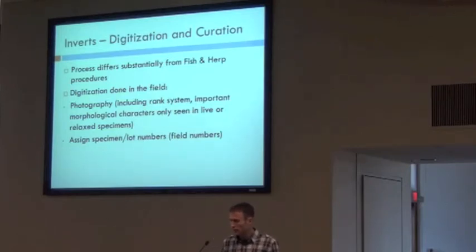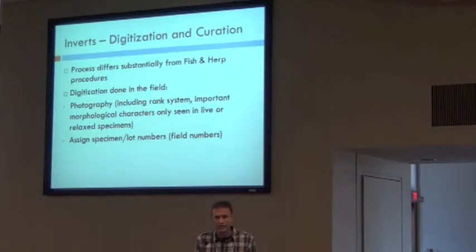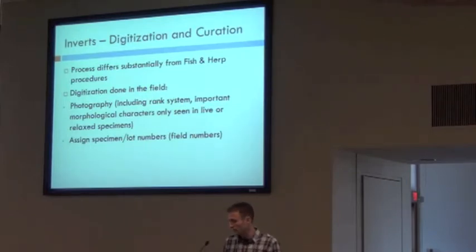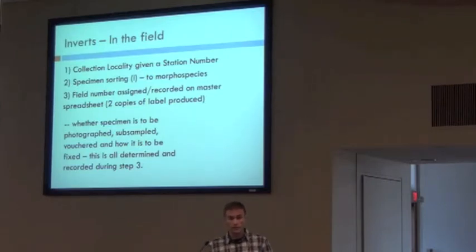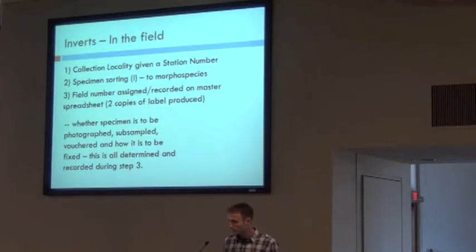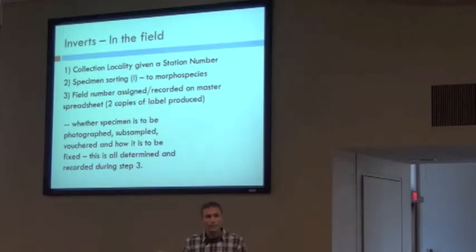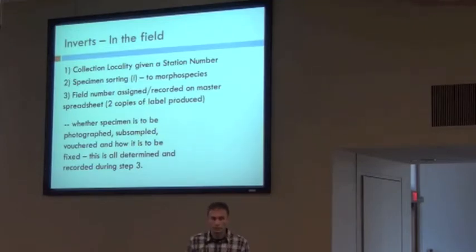Another thing inverts do differently is they assign numbers to specimens while in the field — they call these field numbers. Fish people assign field numbers to a collection event from a particular place and time, not to any one specimen. But inverts assign field numbers as specimen numbers in the field. The collection locality gets a station number, not to be confused with the field number. They do specimen sorting to morphospecies right away because they need to start capturing information through digitization. The field number is assigned to the specimens, two copies are produced, and it's reported to a master spreadsheet. What's going to happen to that specimen — whether photographed, subsampled, vouchered, and how it's to be fixed — is all determined and reported on that spreadsheet during step three.